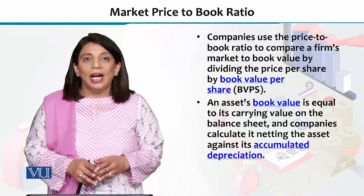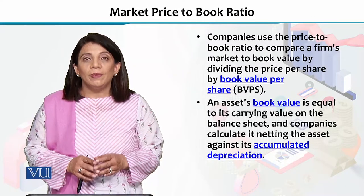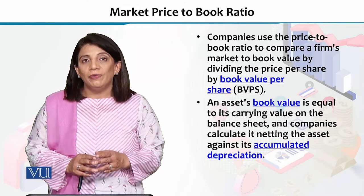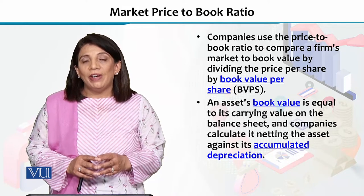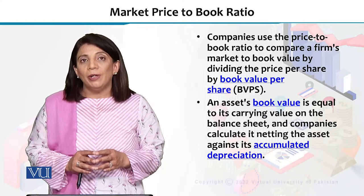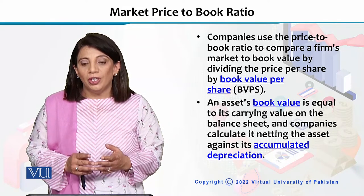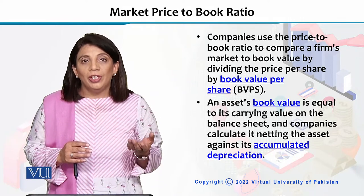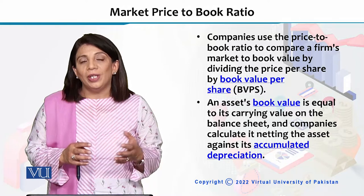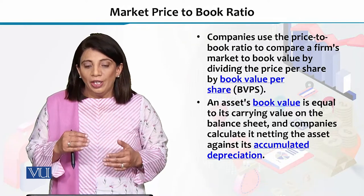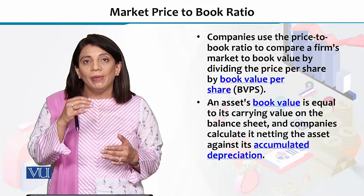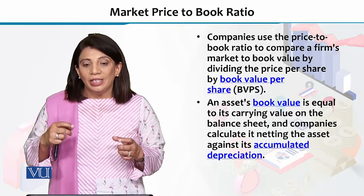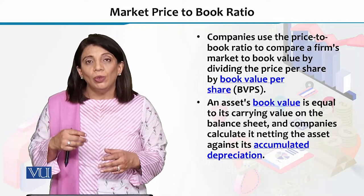In this section I'll explain what is market price to book ratio. As the name specifies, we take into account the market price of a certain stock or share, and then we compare that with the book value of that particular stock. We calculate the ratio by dividing the market price by the book value — this is how we get the market price to book ratio.